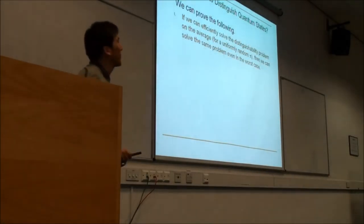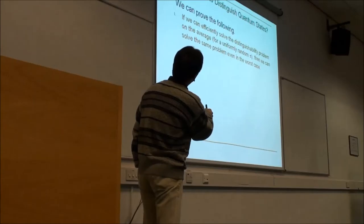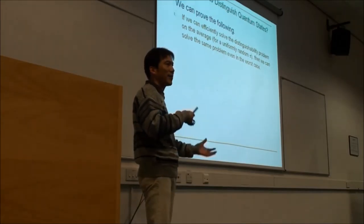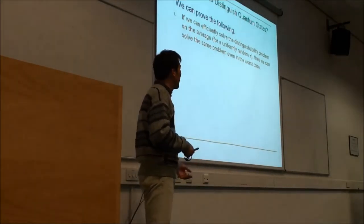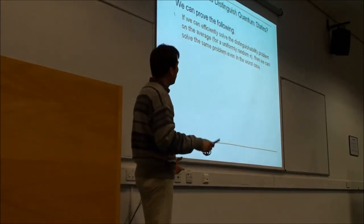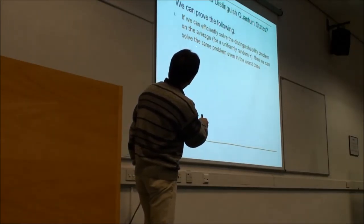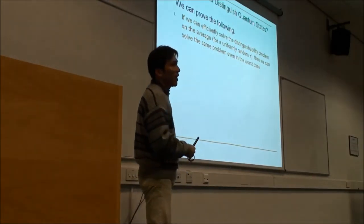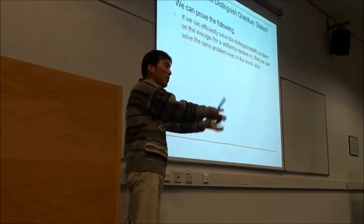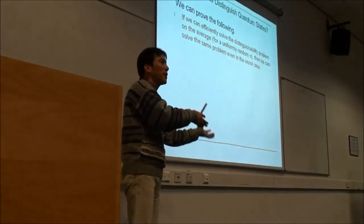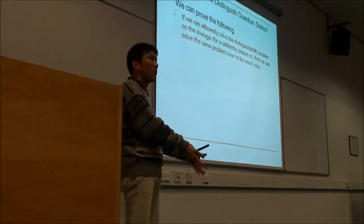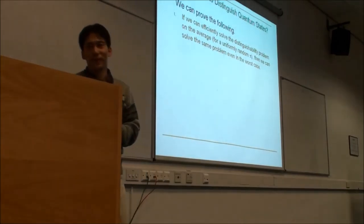We can prove the following: if we can solve the distinguishing problem on the average — where pi is randomly generated — then we can solve the same problem even in the worst case. This shows that worst-case complexity is equivalent to average-case complexity. Not many problems have this property — usually the average-case complexity is much smaller than the worst-case complexity.